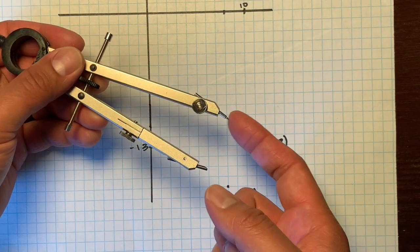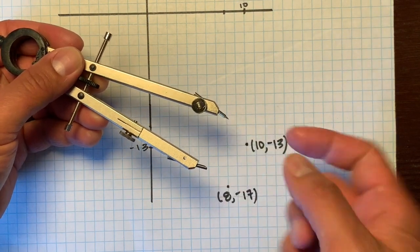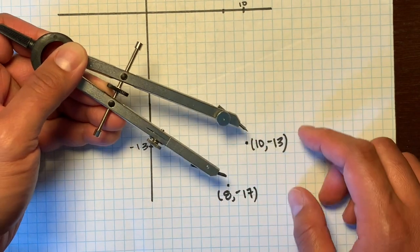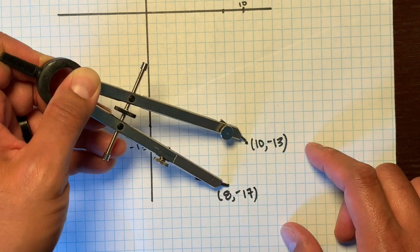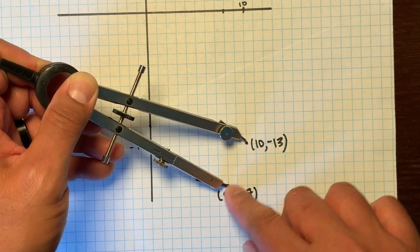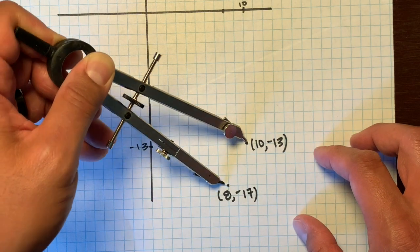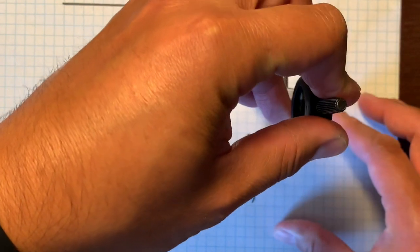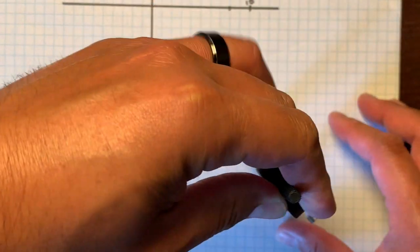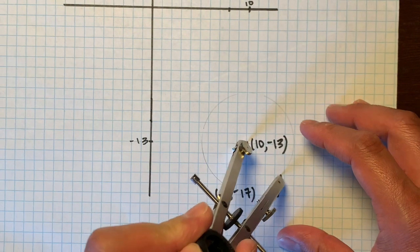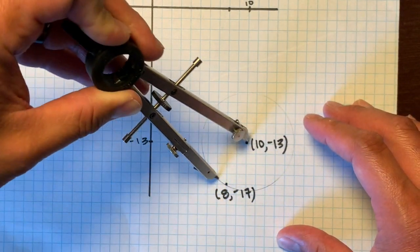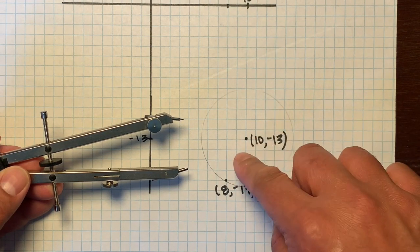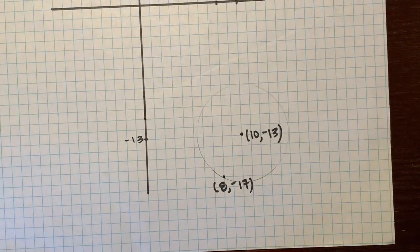To help you visualize that: the center is like the metal part of a compass — the part that hurts, that you don't want to stab yourself with — and then you put the pencil part right on the point. From here to here would be your radius. Remember, the radius is always the same, so when you rotate that compass, that one point will help us figure out what the radius is and help us draw that circle.